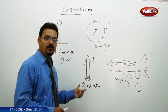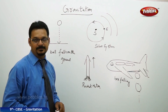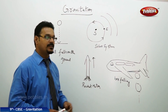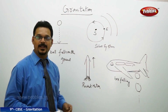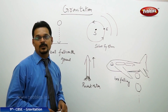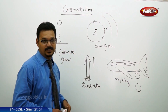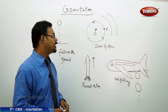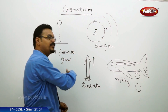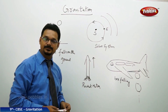Now the question is: why should the rocket have 11.2 kilometers per second to move upward? In the solar system, take the example of our planet Earth. Earth is rotating around the Sun. Why does the Earth have to rotate around the Sun? Why can't it leave its orbit and move in some different direction?